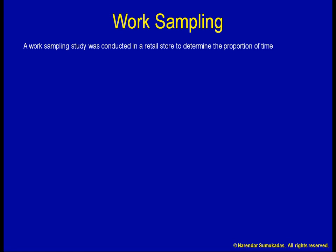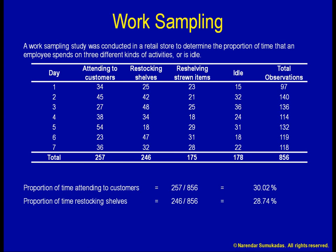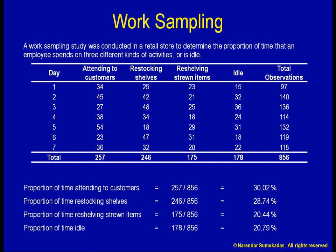Consider the example of our store employee. We take random observations over a period of time, and even the number of observations on each day is randomized. Using the information we have collected, we can determine that about 30% of the employee's time is spent attending to customers, about 29% restocking shelves, about 20% reshelving strewn items, and about 21% is idle time.